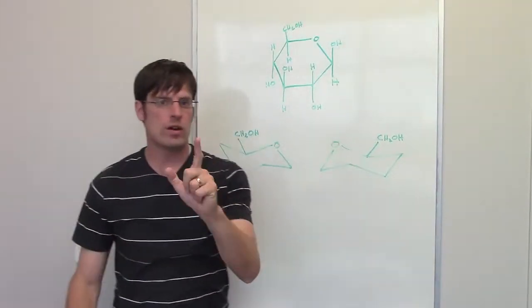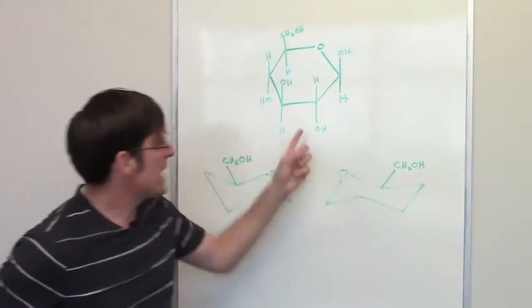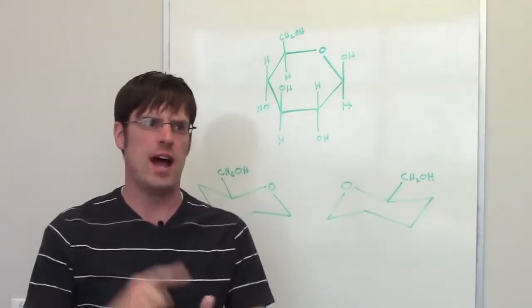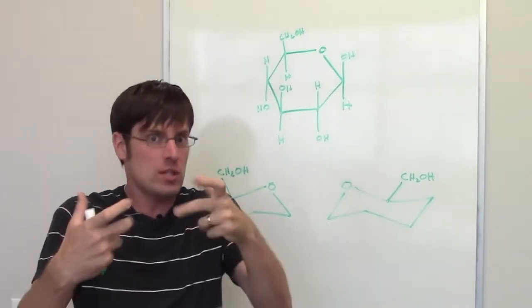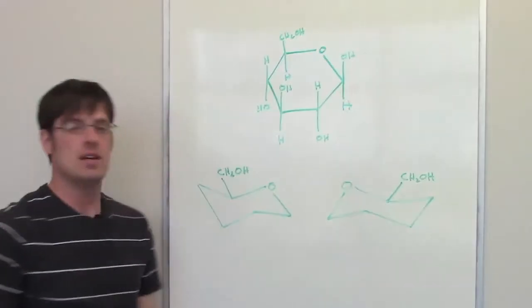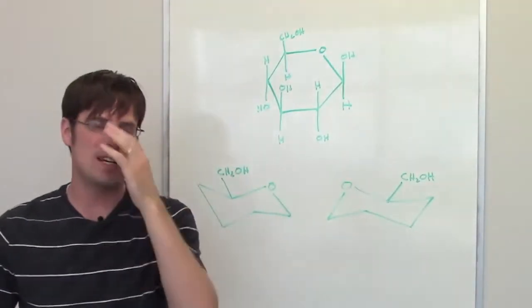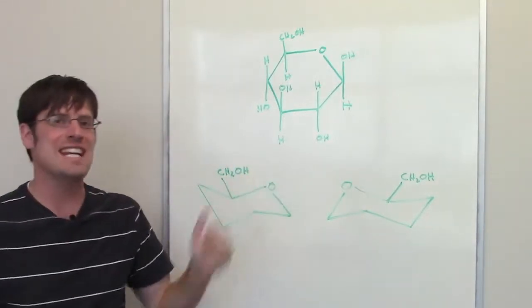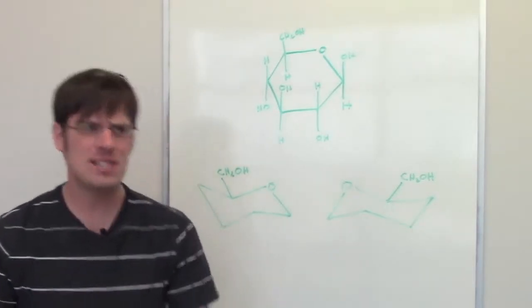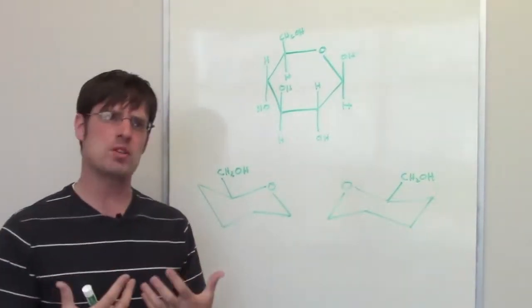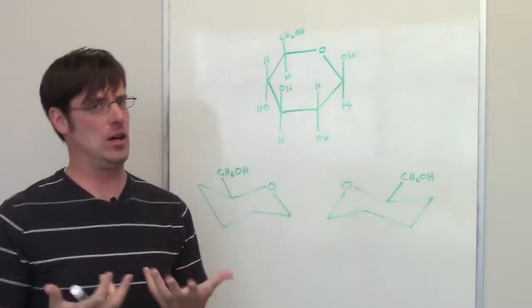Okay, here we are at this question. We're given a Hayworth projection of some form of glucose. Is it alpha D, beta D, alpha L, or beta L? Or some weird combination of the above. For me the easiest way to do this is to convert the Hayworth projection into a chair projection.